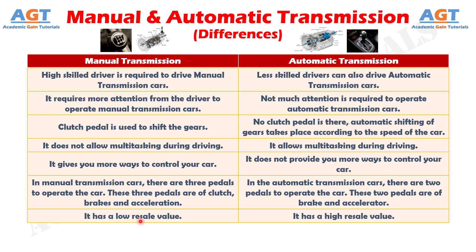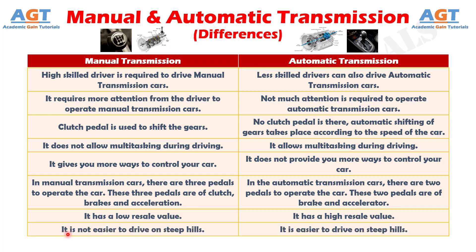Manual transmission has a low resale value, whereas cars with automatic transmission have a high resale value. Number 16. Manual transmission is not easier to drive on steep hills, whereas cars with automatic transmission are easier to drive on steep hills.